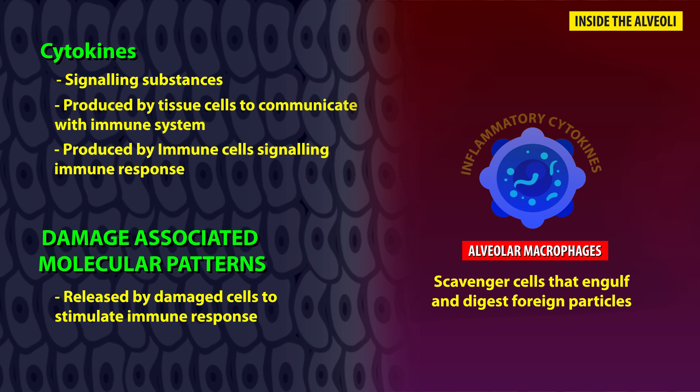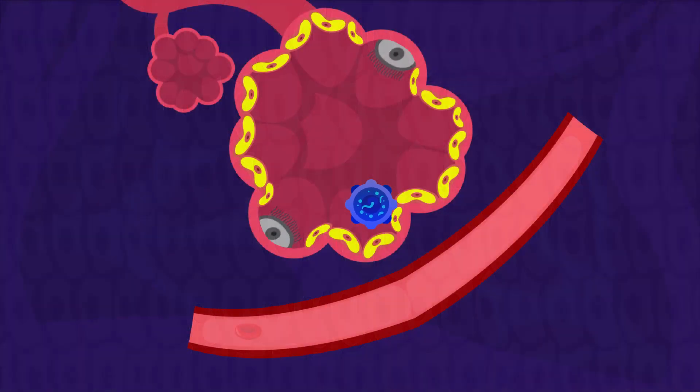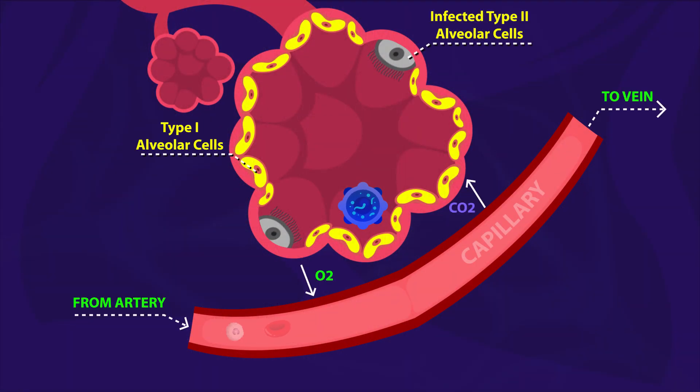To be specific, they release IL-1, IL-6, IL-8, TNF-alpha, and IFN-gamma. These cytokines migrate to the capillaries that line the alveoli.